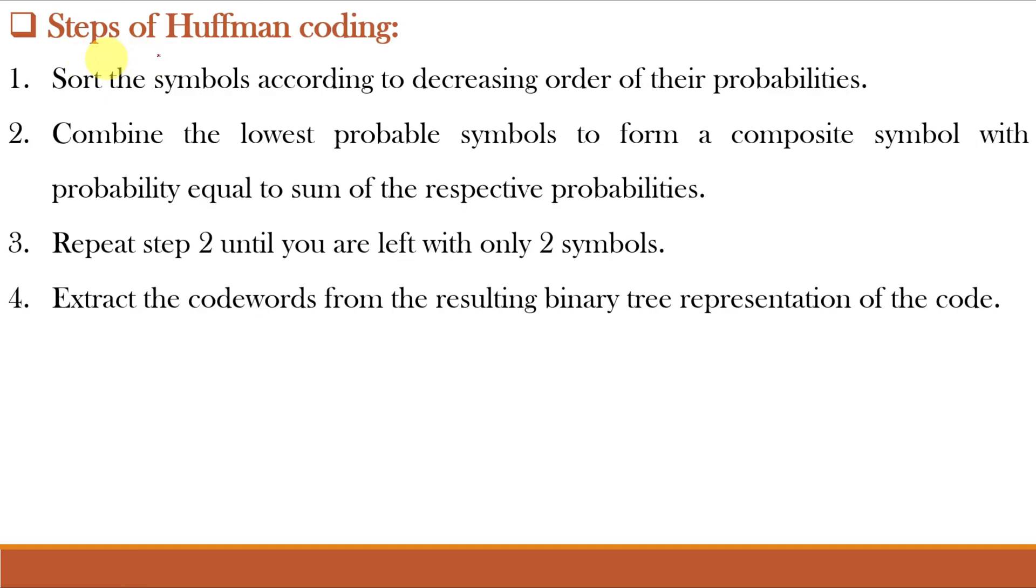These are the steps of Huffman coding. Number one, sort the symbols according to the decreasing order of their probabilities. Number two, combine the lowest probable symbols to form a composite symbol with probability equal to sum of respective probabilities. Now repeat step two until you are left with only two symbols or two intensity values. And finally extract the code words from the resulting binary tree representation of the code. Let us understand with one example.